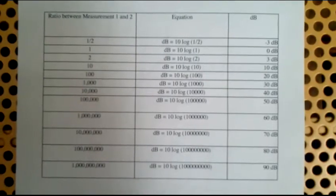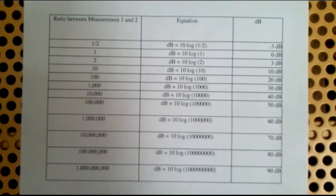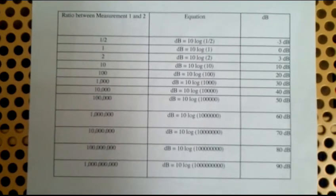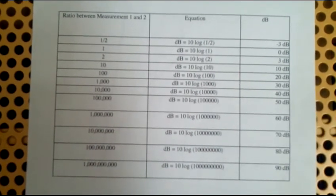This chart shows how the values of the 10 log of I2 over I1 change the value of the decibels. For example, if your value of I2 over I1 equals one half, you get negative three decibels.